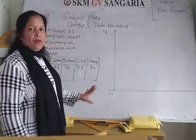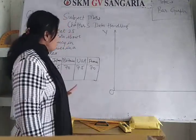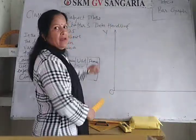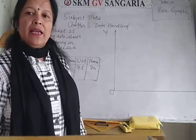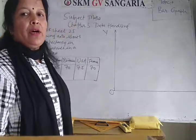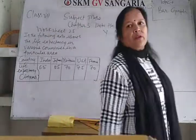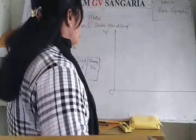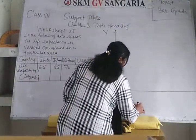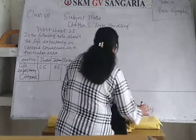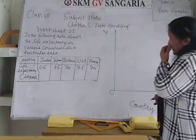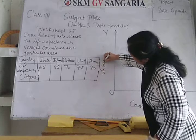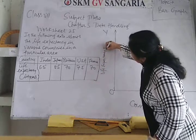Our topic today is bar graph. First of all you will draw the horizontal axis — the x-axis — and the vertical axis — the y-axis. Take pencil and scale with you and use graph paper for this. Use a graph notebook for this bar graph. On the x-axis we are going to take countries, and on the vertical axis we are going to take life expectancy in years.